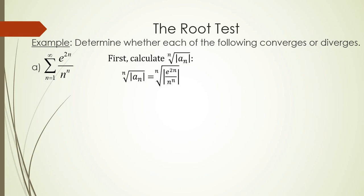First, we calculate the nth root of the absolute value of our series formula a sub n. This gives the nth root of the absolute value of e to the 2n over n to the n power. Notice that e to the 2n and n to the n power are always positive quantities, so there's no need to use absolute value.